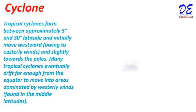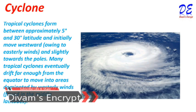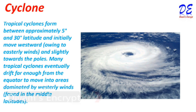Cyclones. Tropical cyclones form between approximately 5 and 30 degrees latitude and initially move westward, driven by easterly winds, and slightly towards the poles. Many tropical cyclones eventually drift far enough from the equator to move into areas dominated by westerly winds found in the middle latitudes.